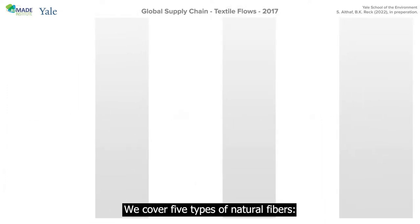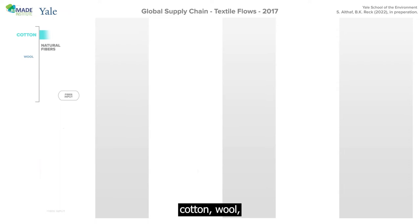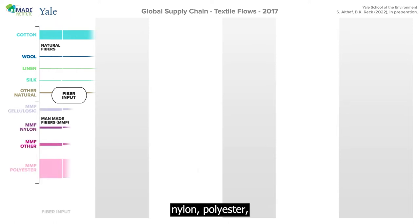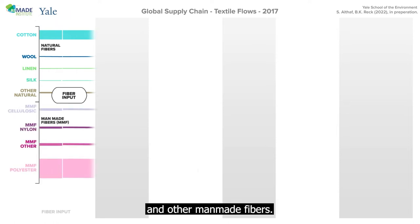We cover 5 types of natural fibers — cotton, wool, linen, silk, and other natural fibers — and 4 types of manmade fibers: cellulosic fibers, nylon, polyester, and other manmade fibers.